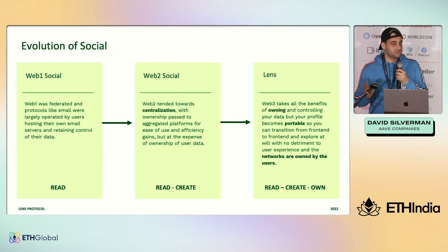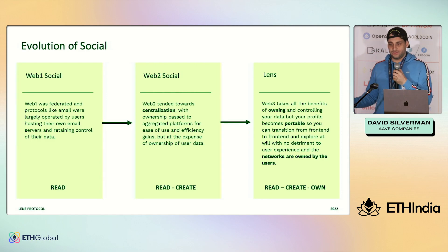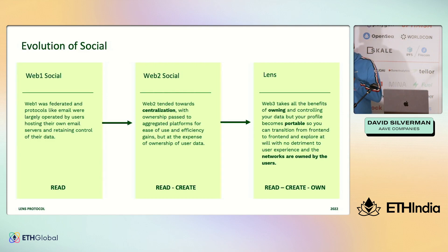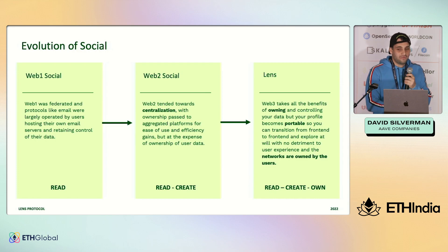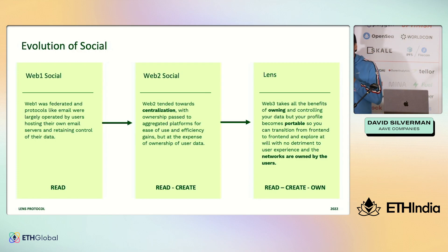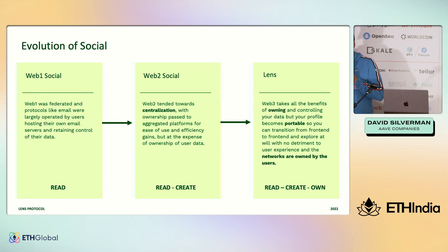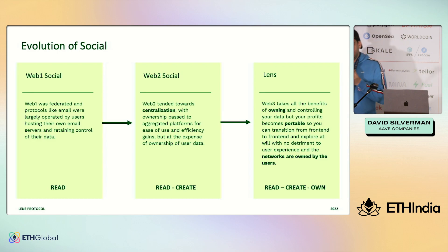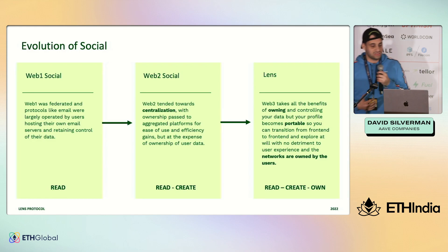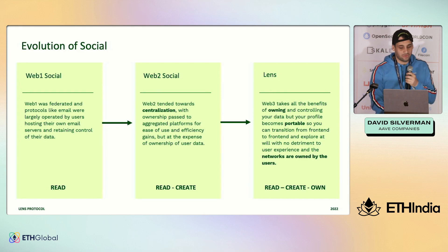Experiences can specialize to different types of users. We've already started to see this in the Lens ecosystem. There are apps that specialize for creators — people who create content — and there are apps specialized for people who are trying to curate content, and apps specialized for people trying to consume content. And because it is a shared database that is user-owned, it is not the same company or same development team building all of those, which causes better experiences for everyone.